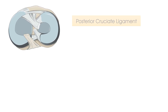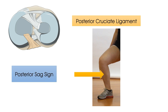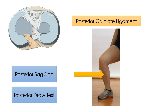The posterior cruciate ligament is often injured when you have an anterior to posterior, or AP, force to the knee when it is in a flexed position, for example during a car accident with a frontal impact or perhaps a sports injury where a person is tackled from in front but the body falls forwards. The posterior sag sign test is a common way of investigating the integrity of the PCL, as well as the posterior draw test.